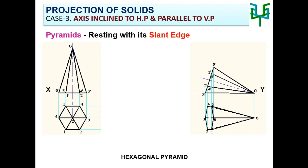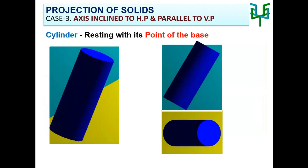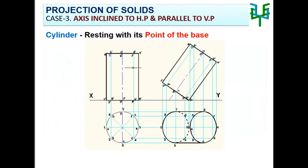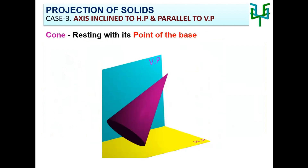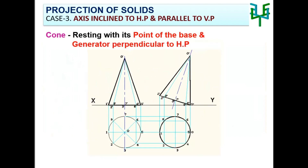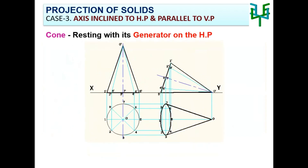Next is a cylinder resting with a point of the base on HP. A cylinder does not have any base corners or base edges, so a cylinder can have only a point of the base on the ground. For a cone resting with a point of the base on HP, the cone can rest on the ground with its generator perpendicular to HP, or the cone can lie on the ground with a generator.